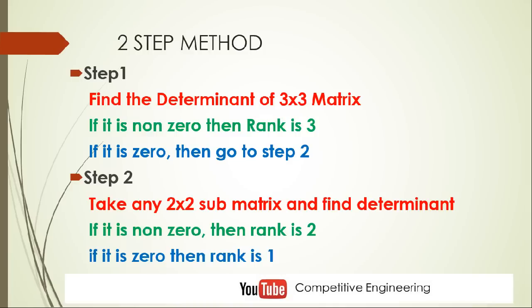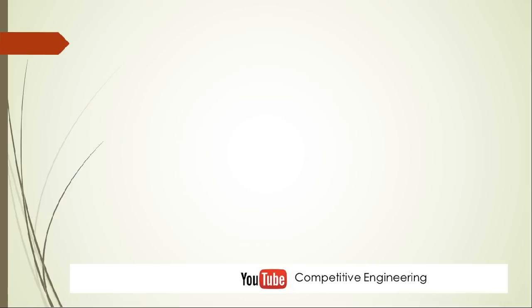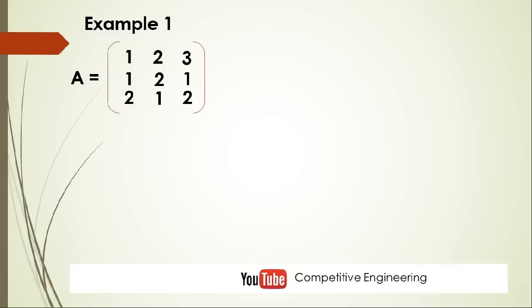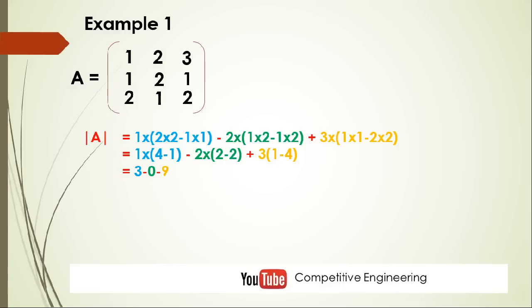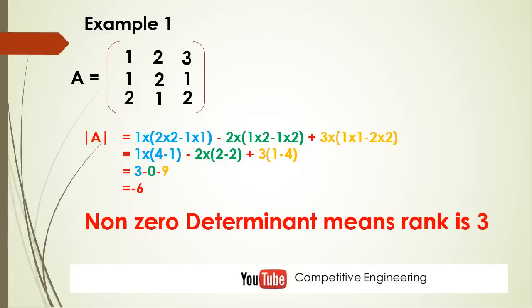Now we are going to try this in some examples. The first example is matrix A equal to [1, 2, 3; 1, 2, 1; 2, 1, 2]. The first step is to find the determinant of A. We will get the determinant as minus 6, which is nonzero, so the rank of the matrix is 3. Problem solved.